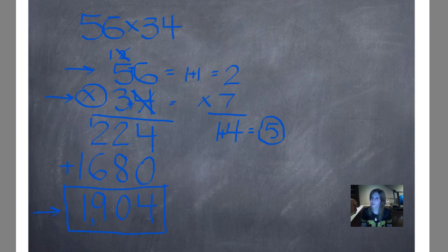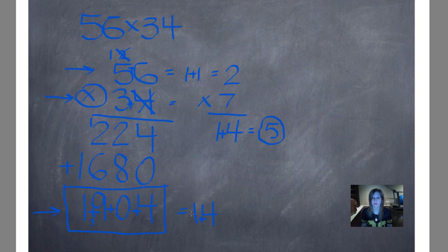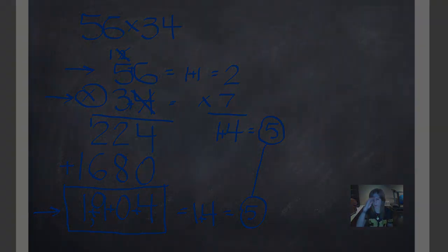Now come down to your final answer and add all of those up: 9 plus 1 is 10, plus 0 is 10, plus 4 is 14. Can't have a two-digit number, so we add those: 1 plus 4 is 5. Five is our magic number. And then we connect those so that it looks like we have our power bar.